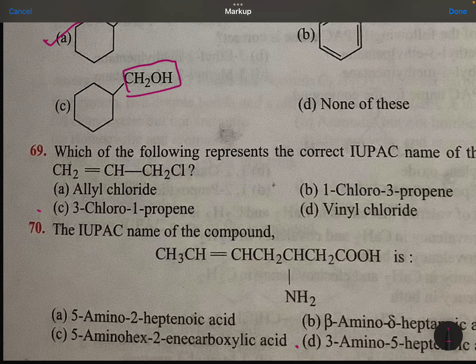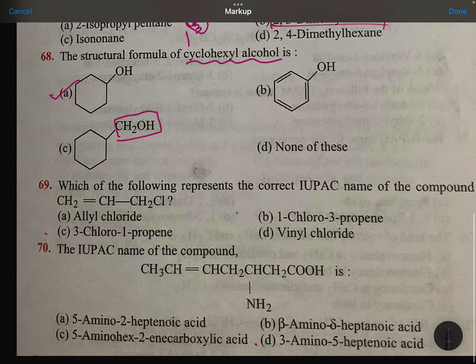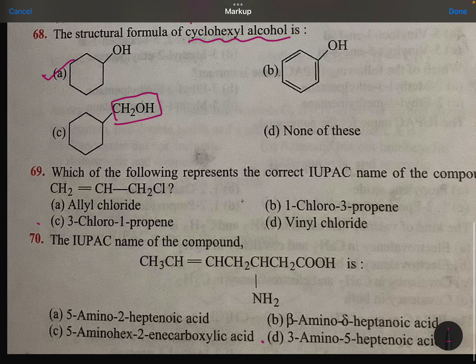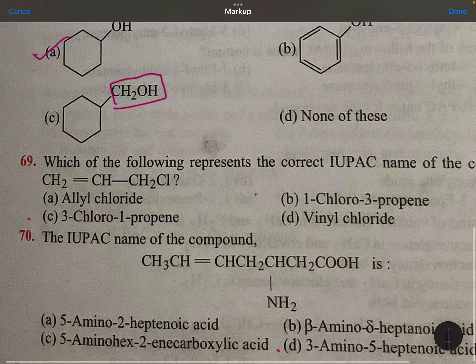Which of the following represents the correct IUPAC name of the compound? Priority — double bond first. 3-chloro-1-propene. Allyl chloride is the common name. Start from here.